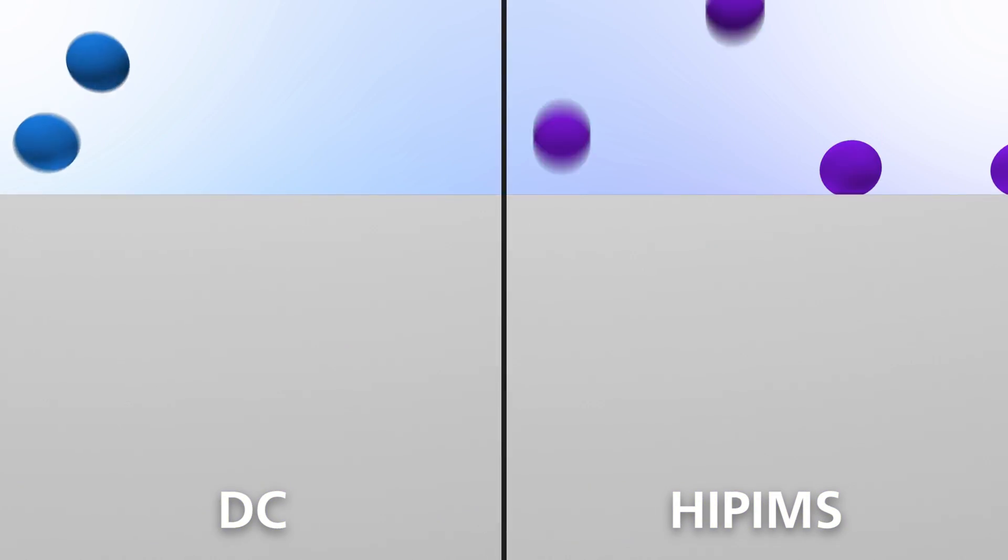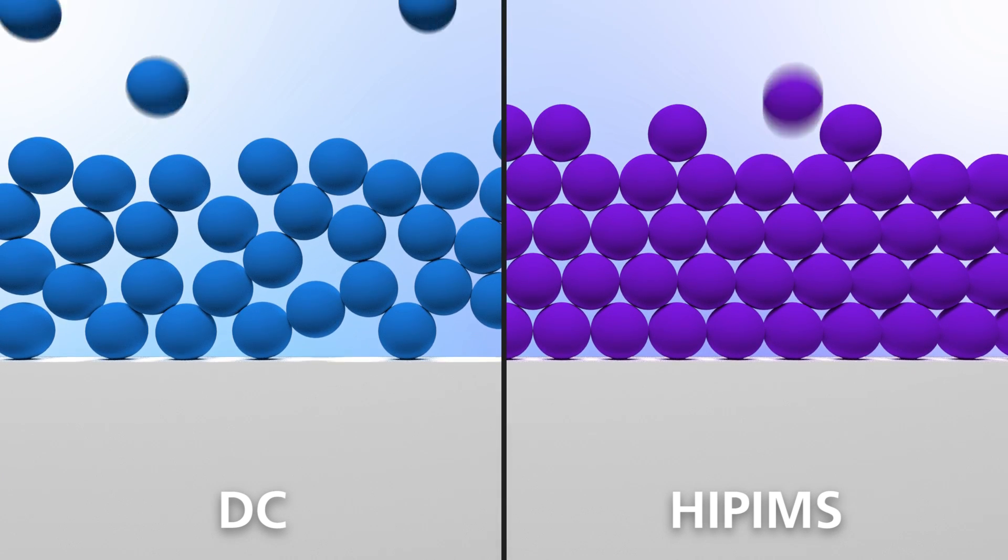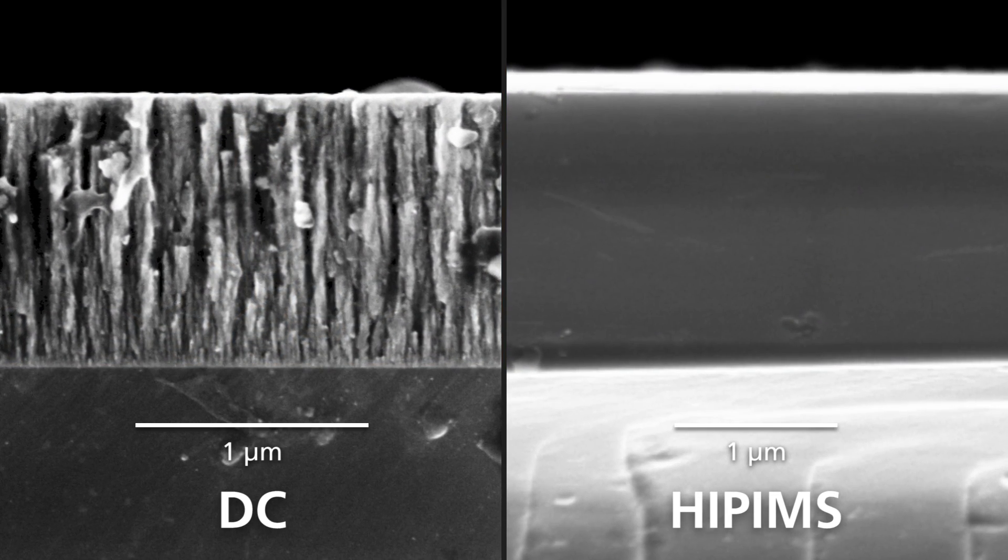This results in modified film properties such as higher density, higher refractive index, a modified crystalline structure, or modified hardness of the deposited films.